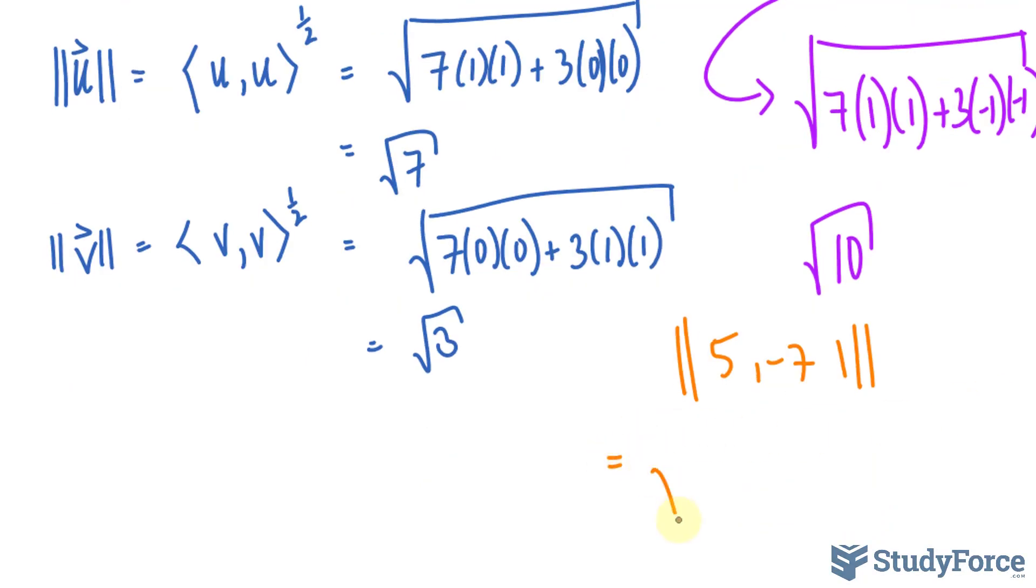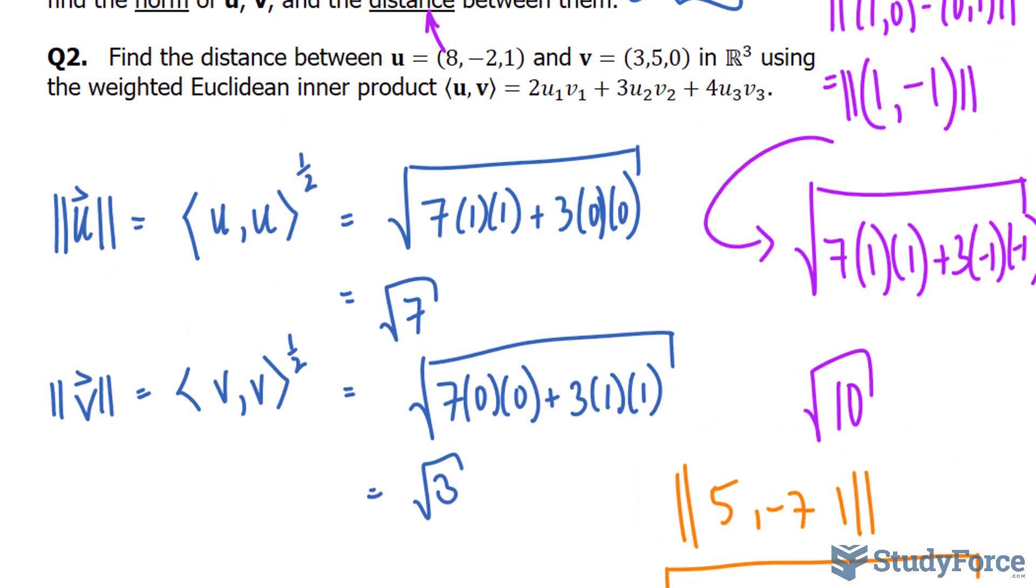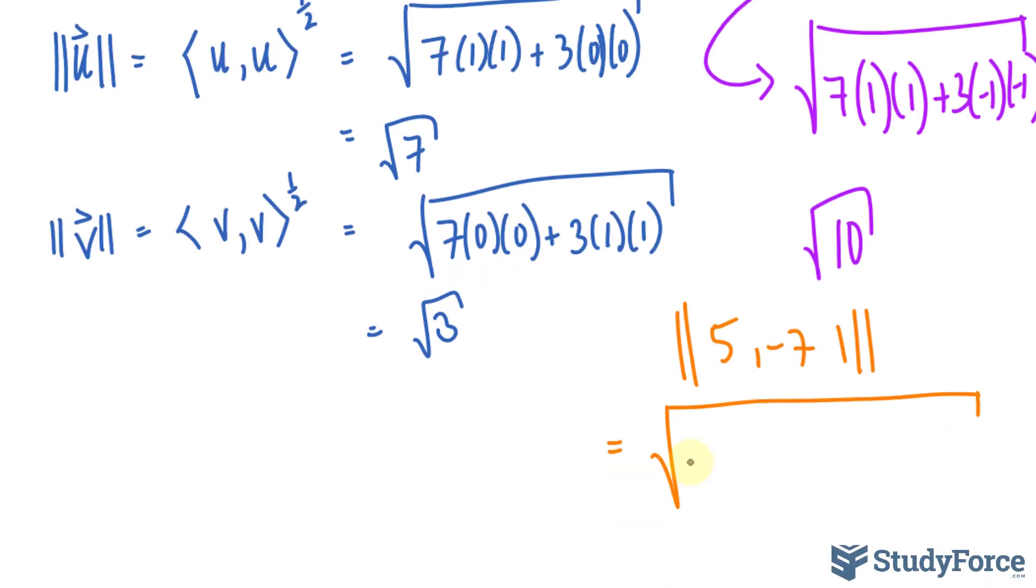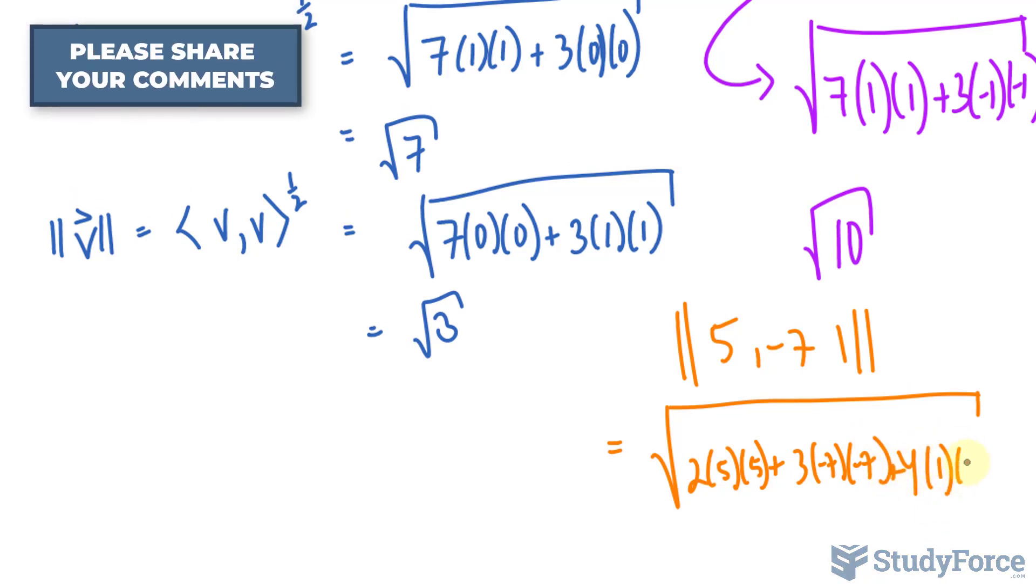That is equal to the square root. We had the weights of 2, 3, and 4. We'll multiply that by 5 times 5, plus the y components, negative 7 times negative 7, plus, that's a 4, times 1 times 1.